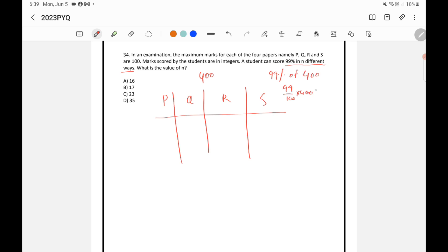So you will get 99 by 100 into 400. So you will get 99 into 4 which is equal to 396. So a student scored 396 mark. We need to see how many ways the student can score 396 mark. So here, try different possibilities.